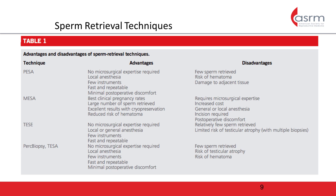Microsurgical epididymal sperm aspiration, or MESA, involves making an epididymal incision and, using the aid of an operating microscope, identifying and aspirating the individual epididymal tubules that appear to be of the highest quality. This technique is associated with the highest pregnancy rates. It also allows for the retrieval of a large number of sperm and offers excellent cryopreservation results. There is a lower risk of hematoma with this technique as compared with PESA, since the puncture sites are either closed or cauterized during the procedure. However, it does require both microsurgical expertise and an incision, which may be associated with increased postoperative discomfort. In addition, it is a more costly procedure, which may be a barrier to some patients.